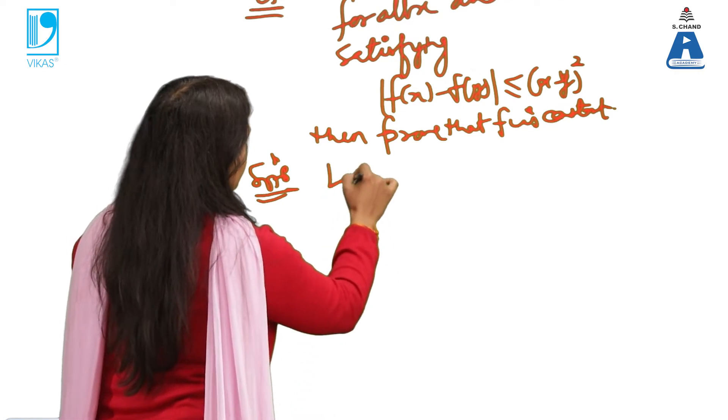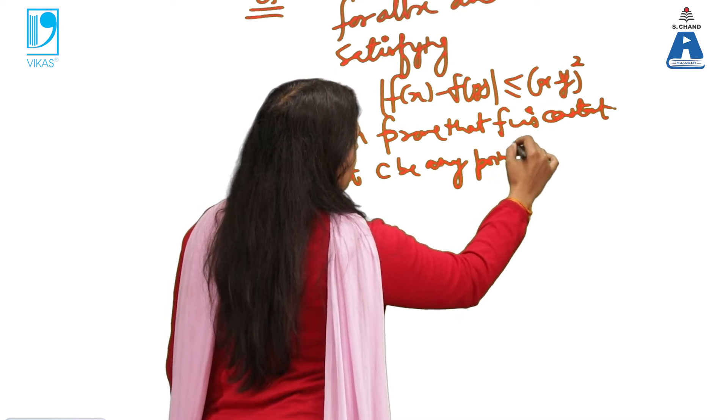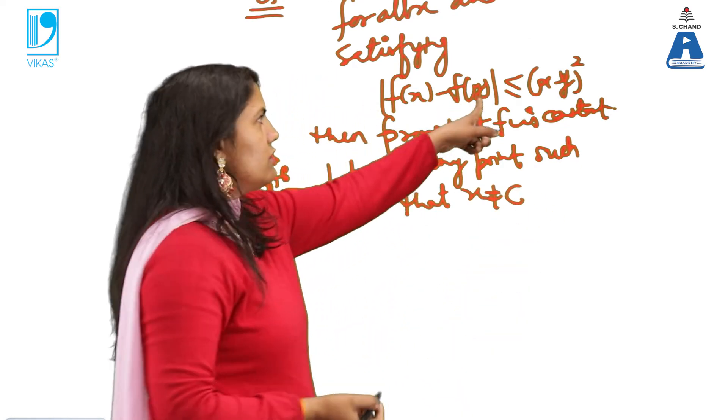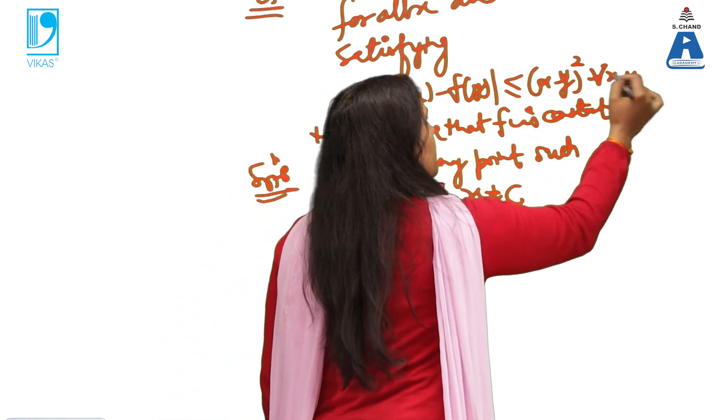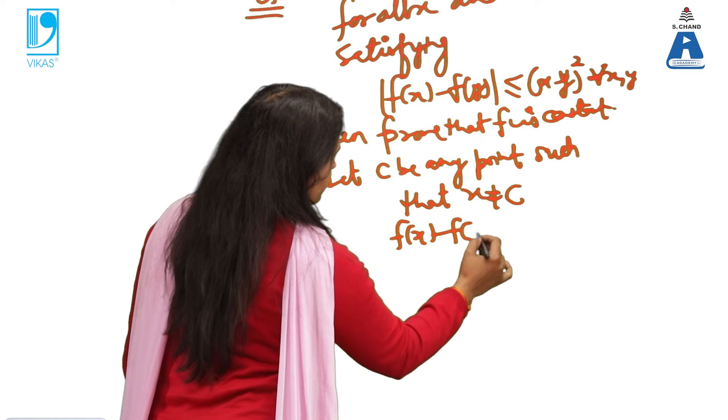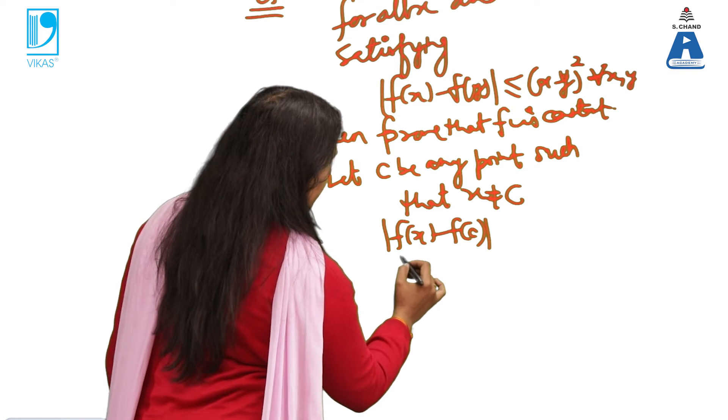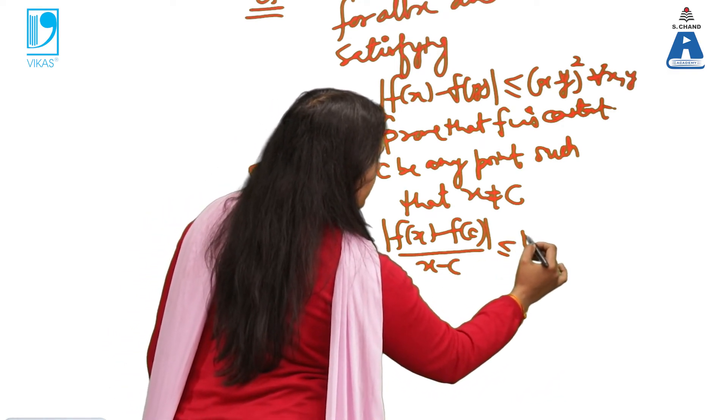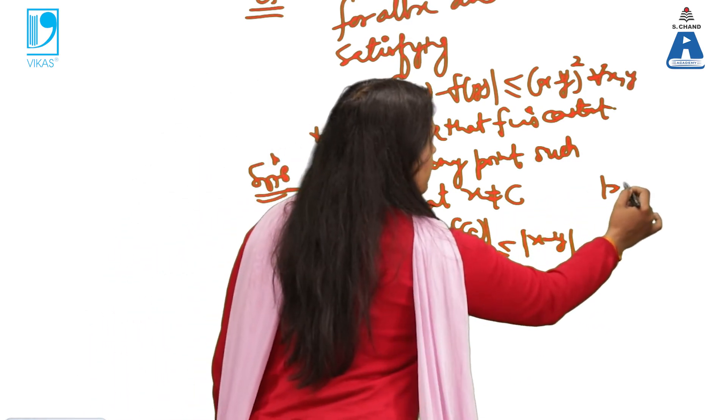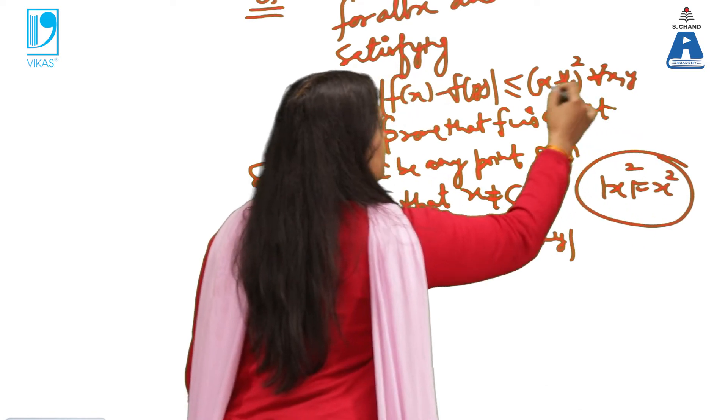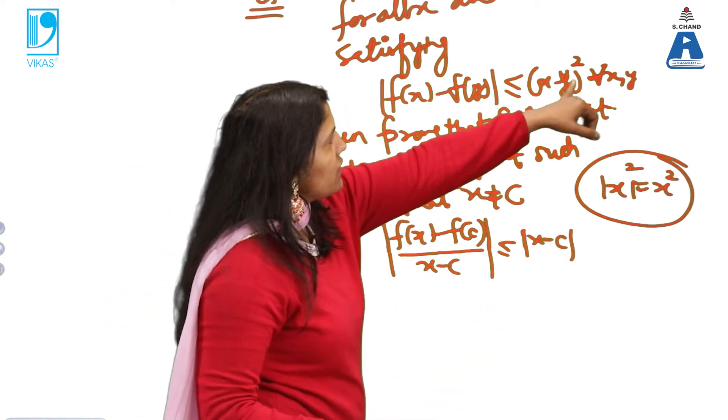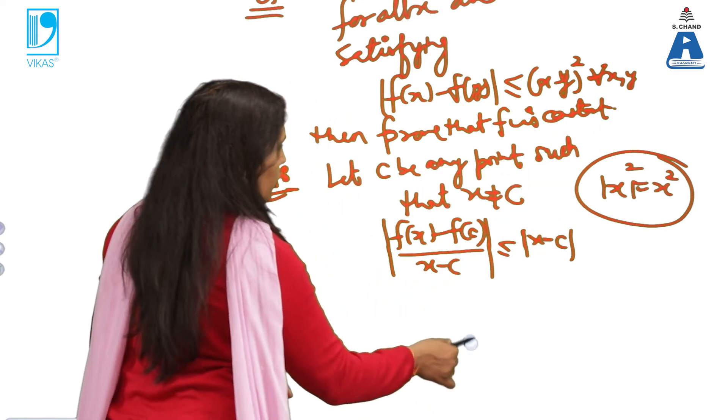So what I am doing? Let c be any point such that x is not equal to c and this is true for all x, y. This is true for all x, y. So it means it will be true for c also. What I am doing? Instead of y, I am putting c. And this is (x - c)². One I am balancing here and one I am keeping at this side. One I am taking in the denominator. Now, what exactly it is?